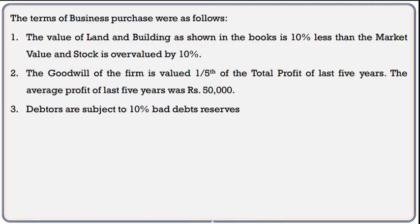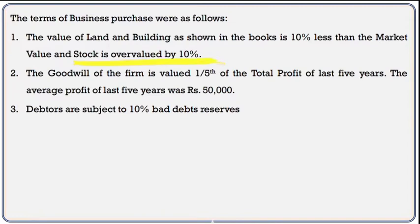Terms of business purchase were as follows. The value of land and building as shown in the books is 10% less than market value, and stock is overvalued by 10%. So the land and building value in the books is already shown at 90% of market value, meaning what is given in the example is at 90%. And stock is already overvalued — shown at 110% of its true value.